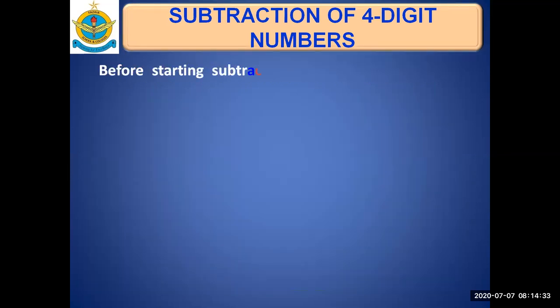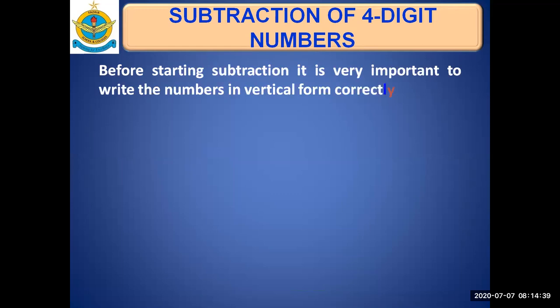Before starting subtraction, it is very important to write the numbers in vertical form correctly. Because if we are not writing the numbers correctly in vertical form, it means we are going to do the solution incorrectly or it will be a wrong answer. For example, we have two numbers: 2469 and 1042.